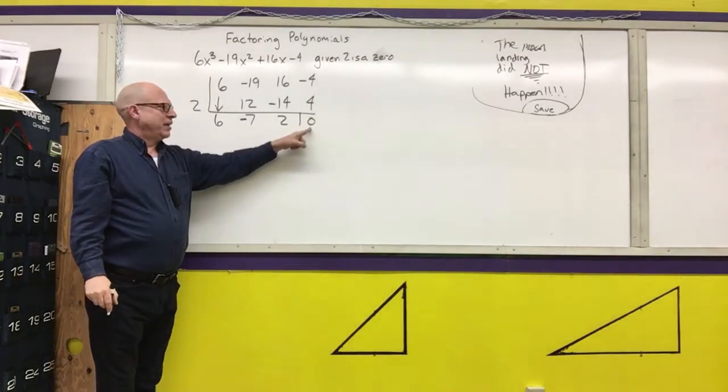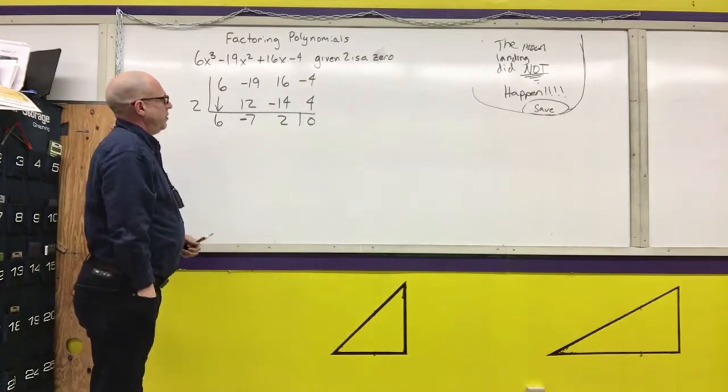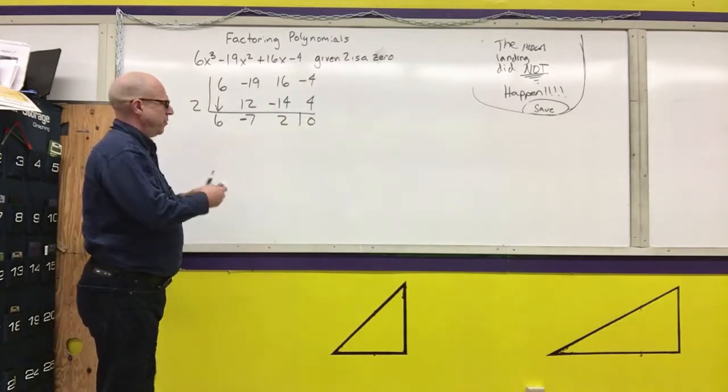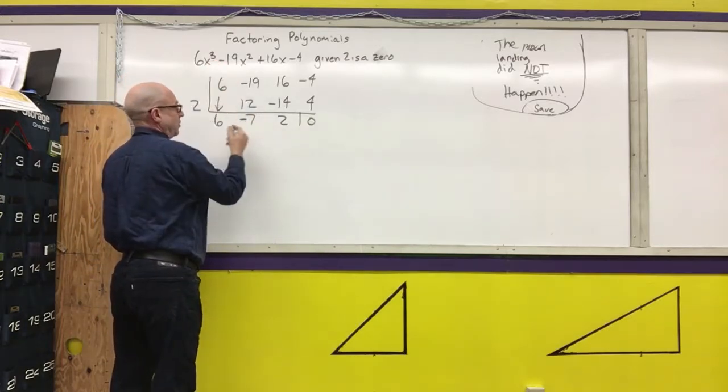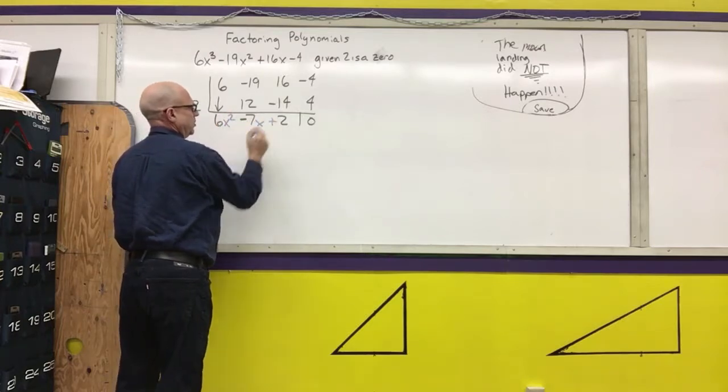Which does, in fact, tell us that 2 is a zero. From the last video I showed you that this actually gives us the rest of the problem. We started out with x cubed divided by something that was x, so this would become x squared minus 7x plus 2.